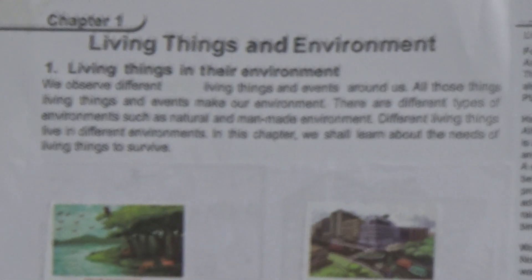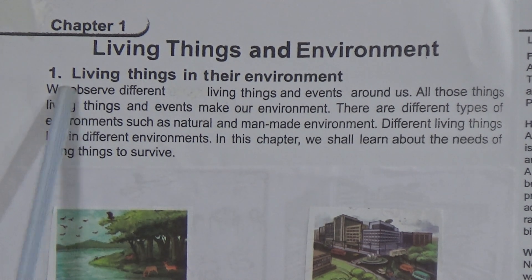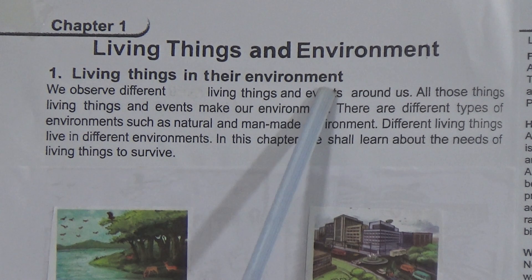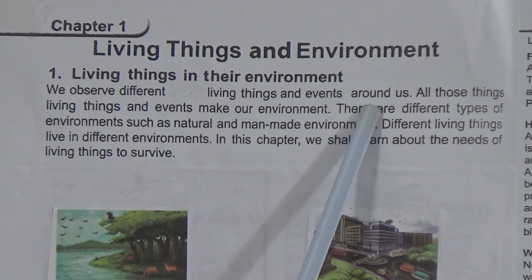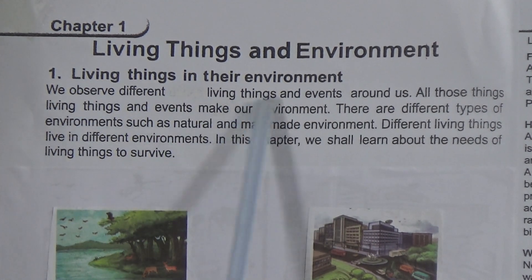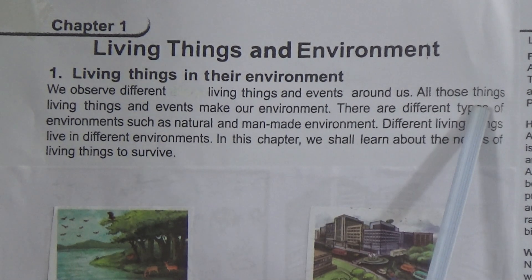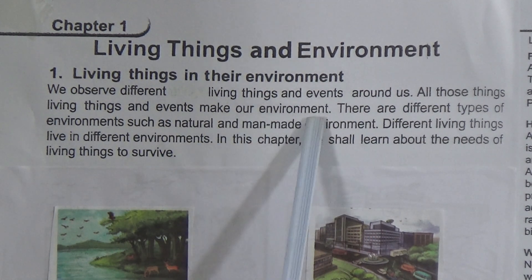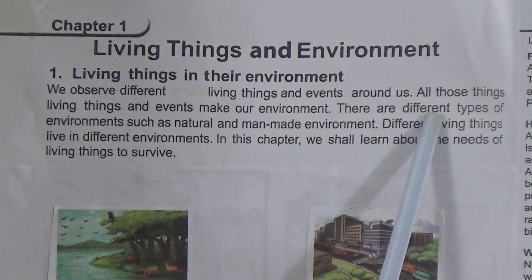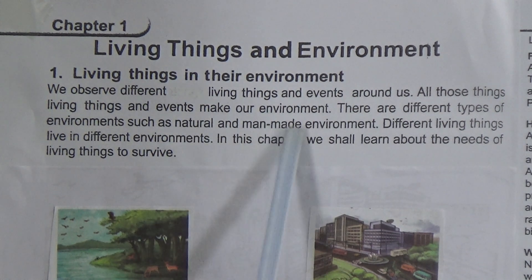This is Chapter 1: Living Things and Environment. We observe different living things and events around us. All those living things and events make our environment. There are different types of environments, such as natural and man-made environments.